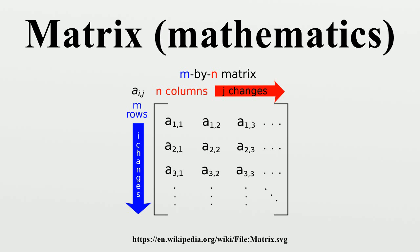A square matrix is a matrix with the same number of rows and columns. An N by N matrix is known as a square matrix of order N. Any two square matrices of the same order can be added and multiplied. The entries a_{i,i} form the main diagonal of a square matrix; they lie on the imaginary line which runs from the top left corner to the bottom right corner of the matrix.